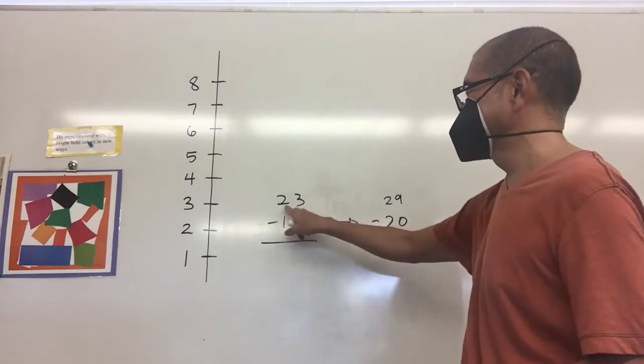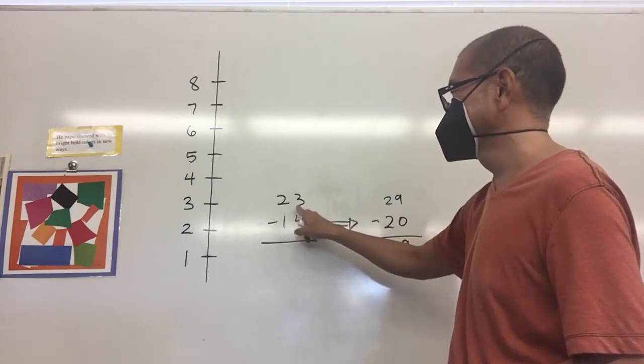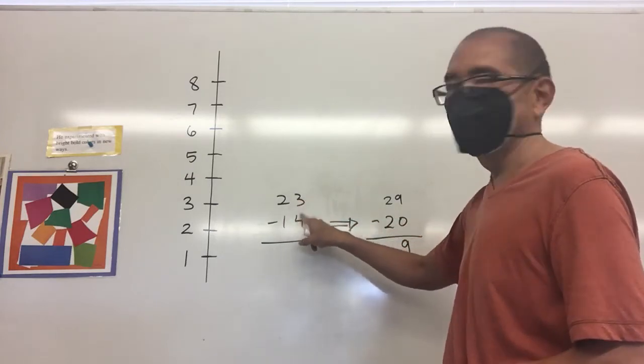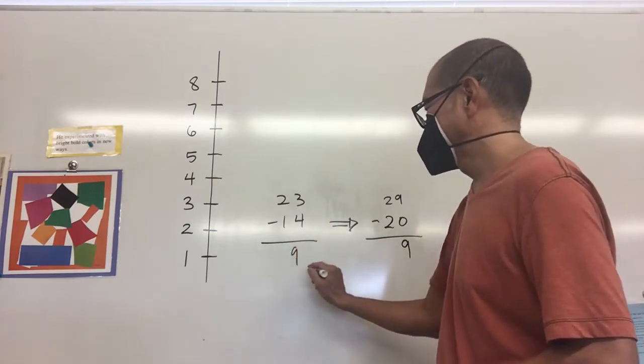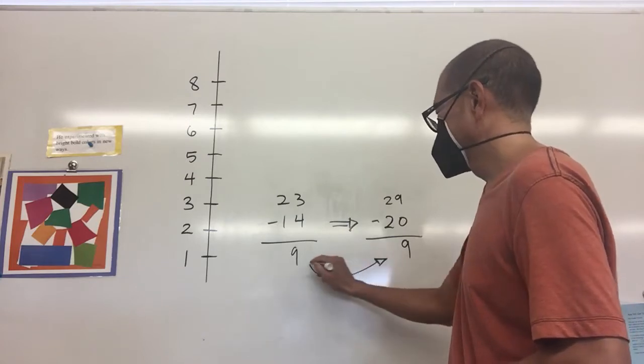If we were to do this you would have to borrow and rename and then do the subtraction and you also get nine and these two numbers are the same.